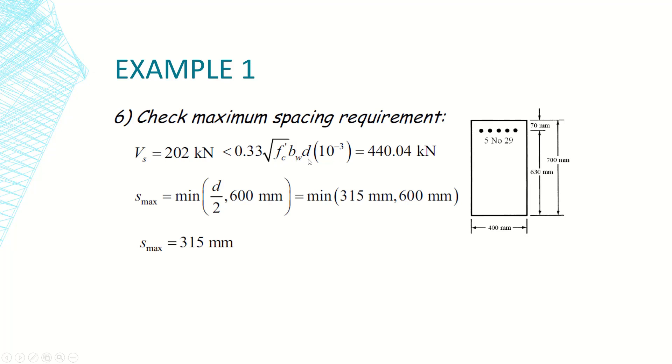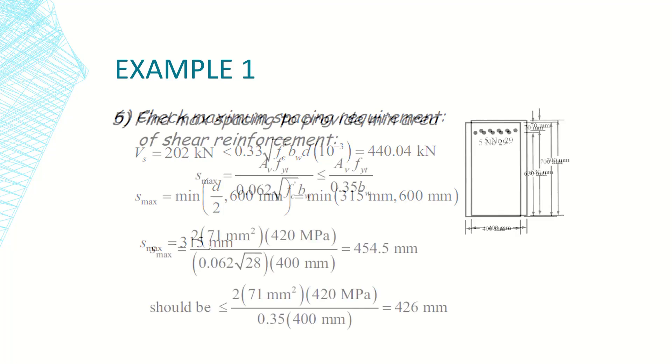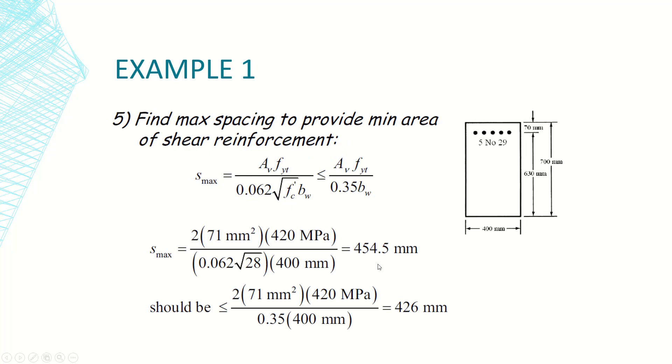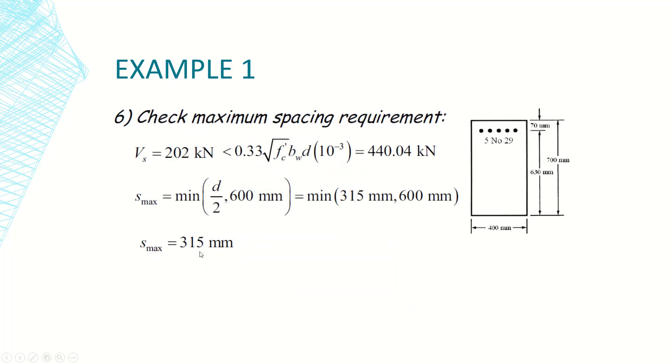However, we have another limit as per code for Vs less than 0.33 radical f prime c b web d. We have also two other limits which are d over 2 or 600. d over 2 is 315, it's less than 600, and 315 is less than 426, so we are going to adopt 315 as the maximum allowable spacing for stirrups in our example.